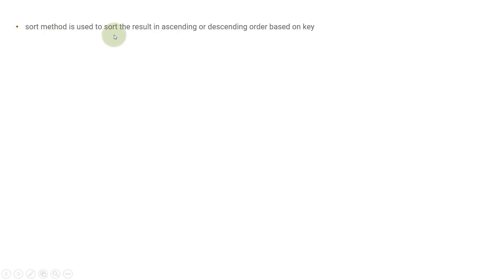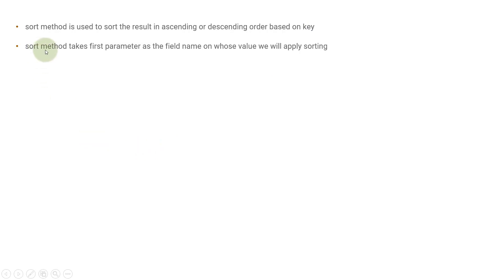The sort method is used to sort the results in ascending or descending order based on a key. You need to provide a key on which you can sort — for example, name can be a key if your document contains a field named name, or it can be age or other fields. The sort method takes the first parameter as the field name on whose value we will apply the sorting. We call the sort method on the find method or find one method, and then provide the field name as the first parameter.